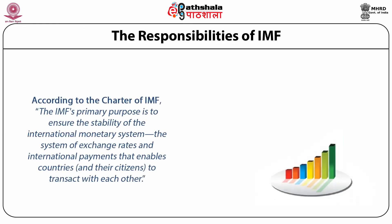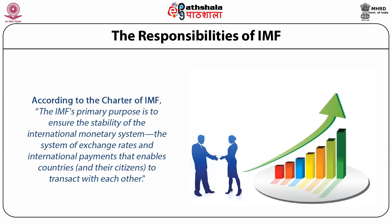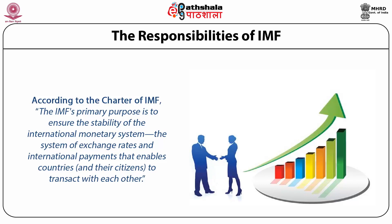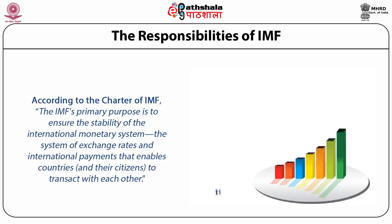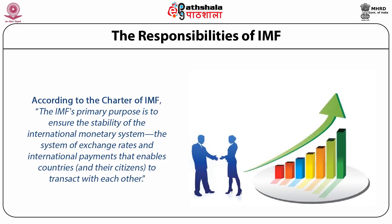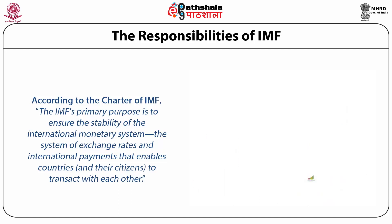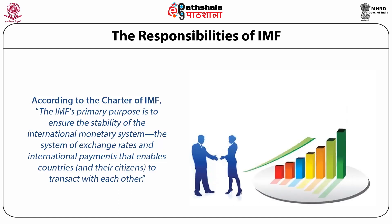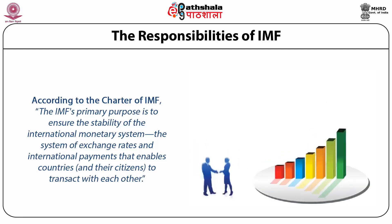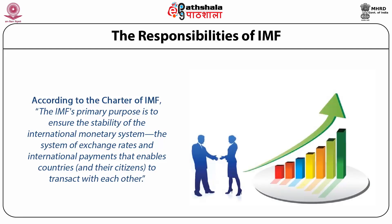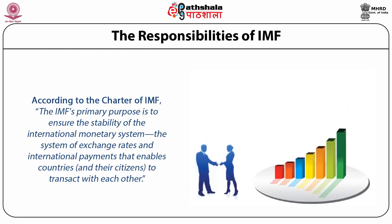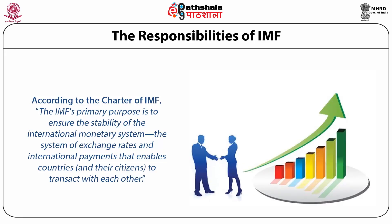The Board of Governors, the highest decision-making body of the IMF, consists of one governor and one alternate governor for each member country. The governor is appointed by the member country and is usually the minister of finance or the governor of a central bank. All powers of the IMF are vested in the Board of Governors. The Board of Governors may delegate to the Executive Board all except certain reserved powers. The Board of Governors normally meets once a year. According to the Charter of IMF, the IMF's primary purpose is to ensure the stability of the international monetary system — the system of exchange rates and international payments that enables countries and their citizens to transact with each other.